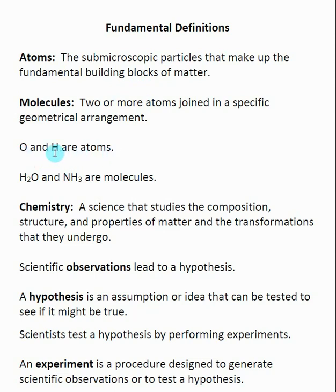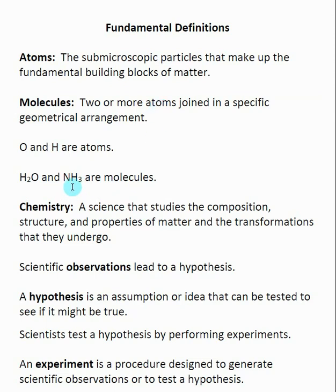When they're written individually, we're just talking about the individual atom or element. When we combine them together, we have hydrogen and oxygen put together to make water, and nitrogen and hydrogen put together to make ammonia. These are molecules because they have more than one atom inside of them.